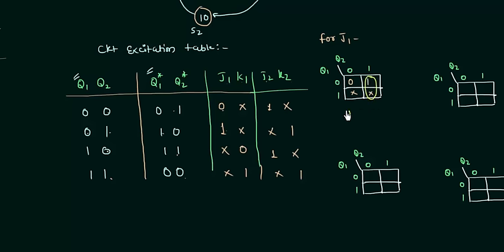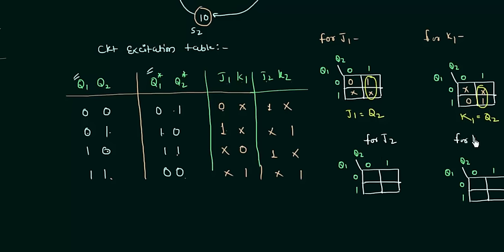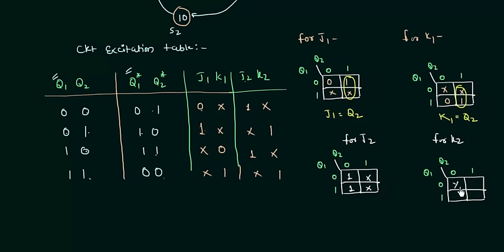From the K-map, K1 equals Q2. Now for flip flop number 2: for J2 the values are 1, don't care, 1, don't care. For K2 the values are don't care, 1, don't care, 1. Including the don't cares in grouping, the value of J2 equals 1 and the value of K2 also equals 1. So our final input values are: J1 = Q2, K1 = Q2, J2 = 1, K2 = 1.